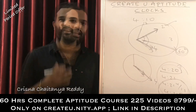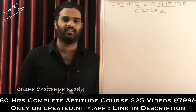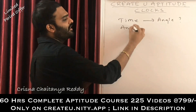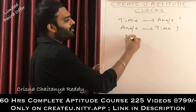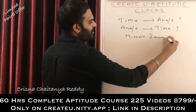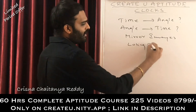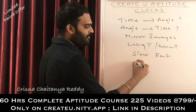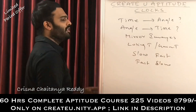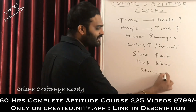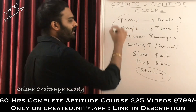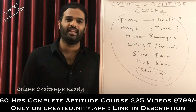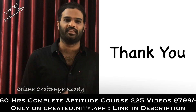Let me tell you the different varieties of questions asked on clocks: they give you time and ask for the angle; they give you the angle and ask for the time; questions on mirror images; questions on losing time and gaining time; fast and slow watch conversions; and questions on striking points — the clock strikes once at 1 o'clock, twice at 2 o'clock, and so on. I will explain each variety in detail in the further videos. Thank you so much, I'm Krishna Jaitanya Reddy.